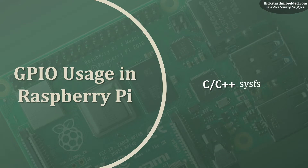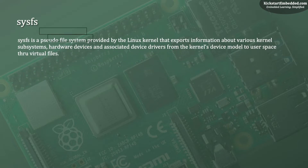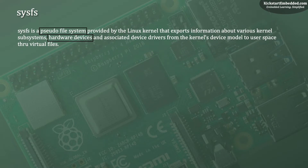In today's video, we will talk about GPIO usage in Raspberry Pi and any other Linux system for that matter, using the SysFS framework. But first, let us understand a little bit about what SysFS is. SysFS is a pseudo-file system provided by the Linux kernel. It exports information about various subsystems as well as hardware devices and even device drivers. The key thing is that every configurable attribute becomes a file that you can write to. This is the most generic abstraction and can be used by any application with file IO capability. Any item that is abstracted — be it subsystems, hardware devices, or drivers — will all be represented as files.